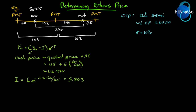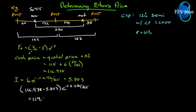Now we have all our variables: S₀ = 116.978, I = 5.803, r = 10%, and T = 270/365. We just plug into the formula: F = (116.978 - 5.803) × e^(0.1 × 270/365). This is just calculator work at this point, and it gives us 119.711. So 119.711 would appear to be the futures price — but we're not done yet.